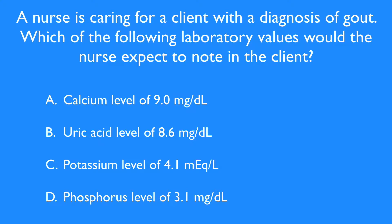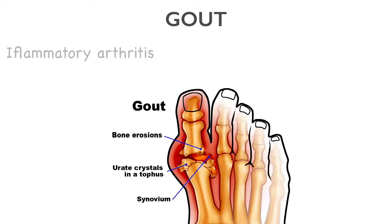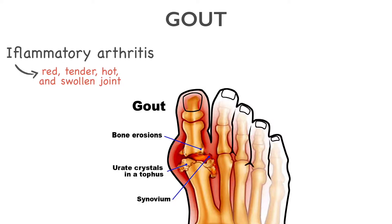Before you pick an answer, let's review the pathophysiology for gout and make sure that you check at the very end of this video for a table of correct lab values in case you need to review them. Gout is a form of inflammatory arthritis characterized by recurrent attacks of red, tender, hot, and swollen joints. An attack of gout can occur suddenly, often waking up the client in the middle of the night with the sensation that the big toe is on fire.